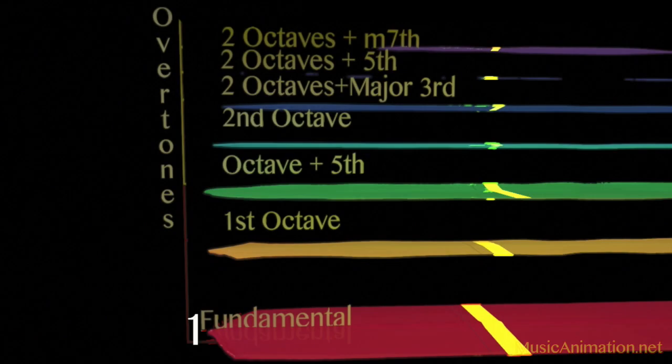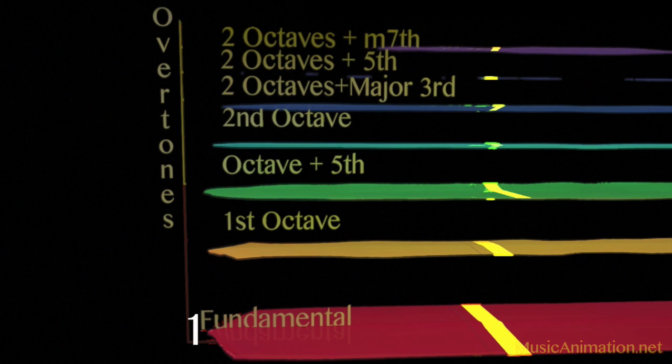If we number the fundamental as one and use a higher number for each higher harmonic, we can see that the frequencies strongest in the oboe are one, three, five, seven, or the odd numbered harmonics.